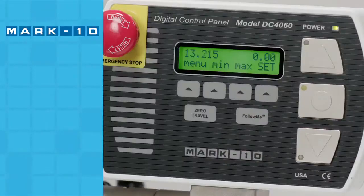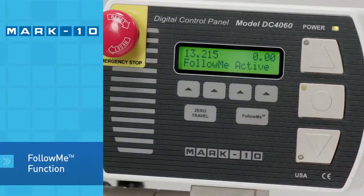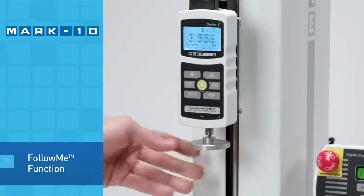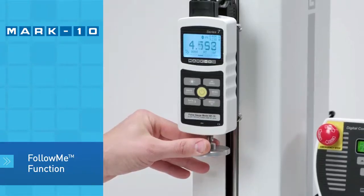Cross-head positioning prior to or after a test is easy with the unique follow-me function. Simply push and pull on the force gauge or load cell to move the cross-head. The greater the force, the faster the speed.